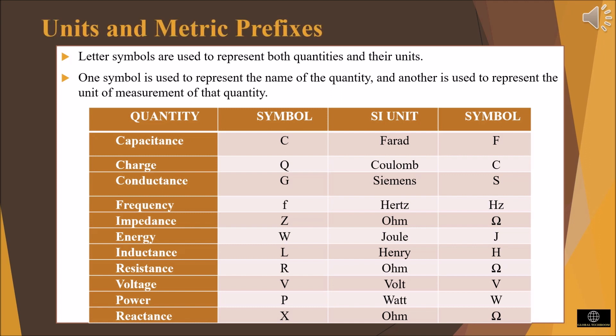Units and metric prefix. In electronics, we must deal with computable quantities — for example, how many volts are measured, or how much current there is. Letter symbols are used to represent both quantities and their units: one symbol for the name of the quantity and another for the unit. The table shows electrical quantities and their corresponding units with symbols.